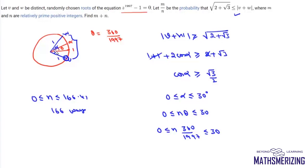Now this angle can be either clockwise or in the anti-clockwise direction, so we have 166 other roots in the other direction. So the total number of favorable ways in which mod of v plus w will be greater than or equal to root of 2 plus root 3 is given by 332. So for any root we have 332 favorable positions.